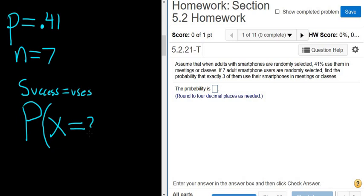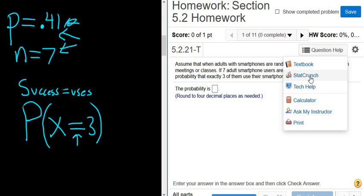Now all you do is go to StatCrunch. You click on where it says question help, and then click on StatCrunch. Number n is always the bigger number. Then you go to Stat, Calculators, Binomial.